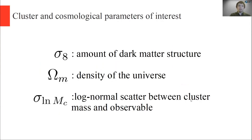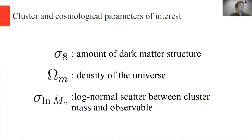I want to define some key terms. Sigma eight tells you how much matter structure there is. Omega_m is another cosmological parameter telling you the density of matter in the universe. Sigma_log_mc is a parameter we've defined as the log-normal scatter in the mass observable relation — higher means more scatter, lower means less. The effect of sigma_log_mc on some of our observables is similar to that of sigma eight or Omega_m, which is why we need to find a particular combination that can either break this degeneracy or constrain sigma_log_mc very well.